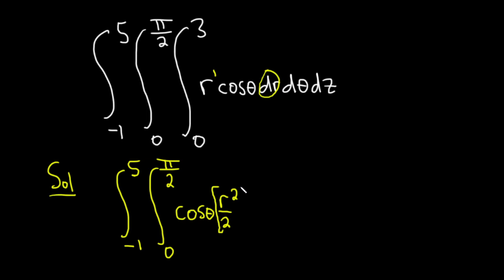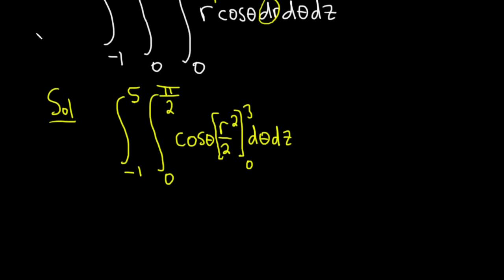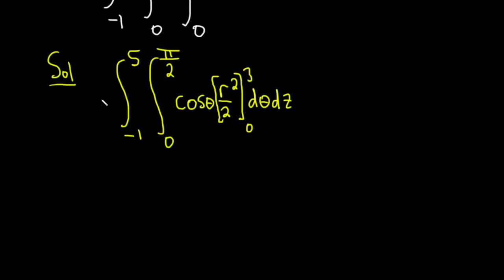I'm going to put this in brackets here to indicate that we still have to evaluate this, so we're going from 0 to 3. And then we still have the d theta and also the dz. Just be really careful with the notation when you're doing problems like this.